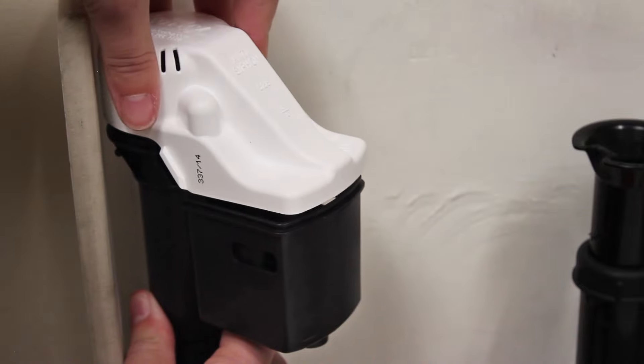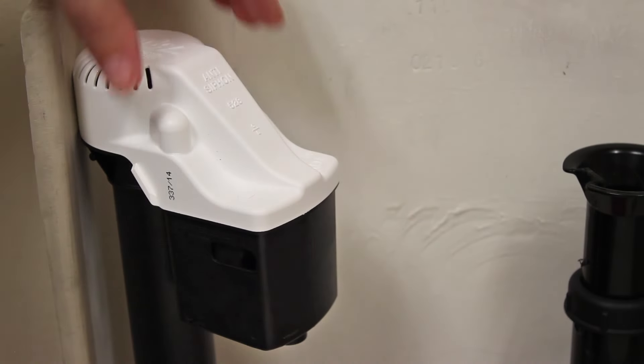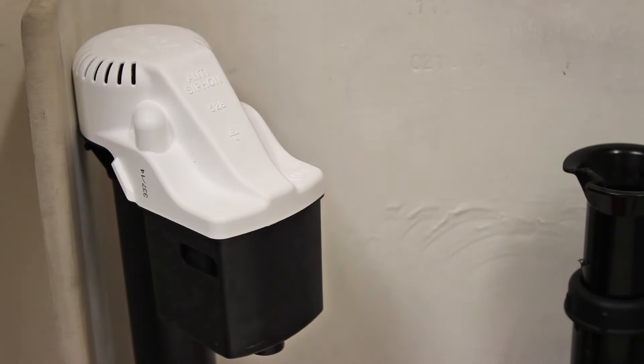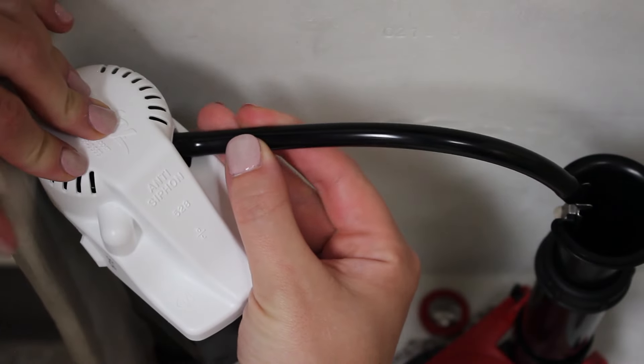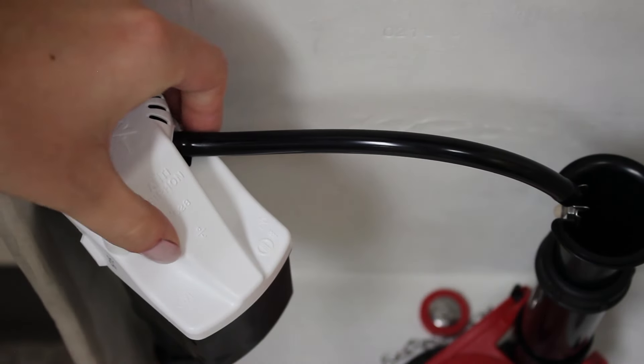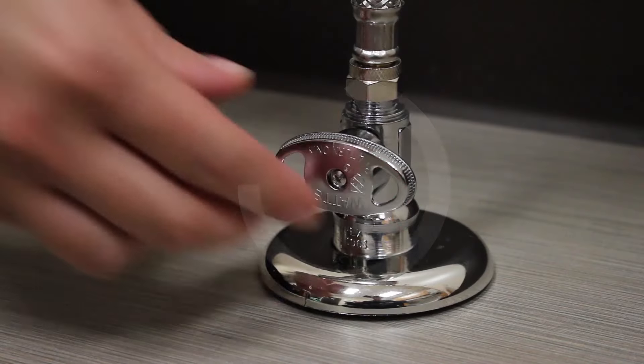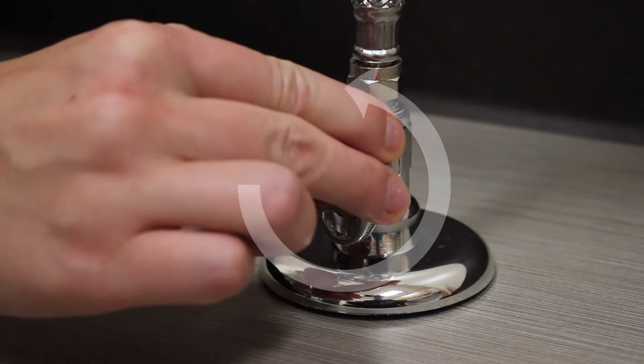Snap the valve cover back into place. Make sure the valve is locked into place by turning it clockwise. Put the refill tube back on and pinch the refill tube and the cover to make sure the cap is completely tightened. Turn the water supply on to test water flow.